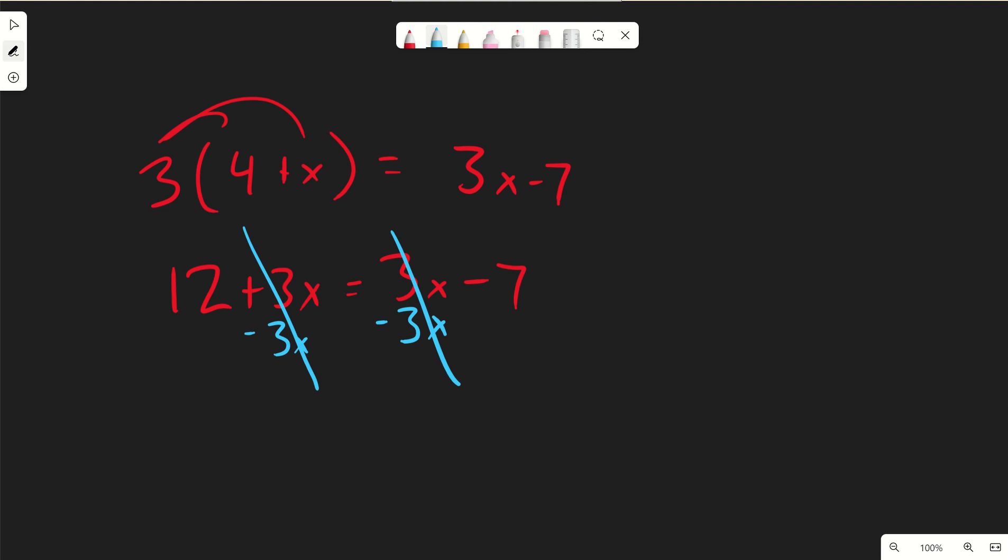So I've gotten rid of all of my x's, and this gives me 12 equals negative 7. And we can look at this and say, well, I know right now, because I'm a smart kid who's more than 1 and understand a concept of numbers, that 12 is not the same as negative 7. Those are different values. Because these are different values, there are no solutions. When we have different values, there's no solutions. If we have the same values, there's infinite solutions.